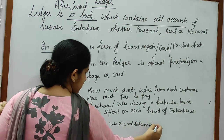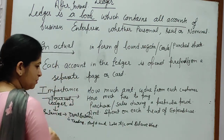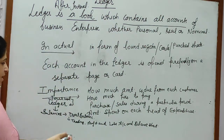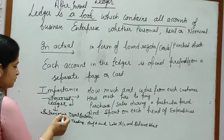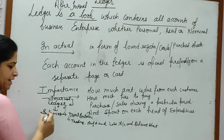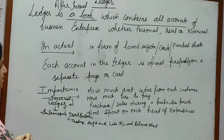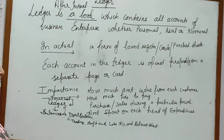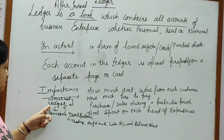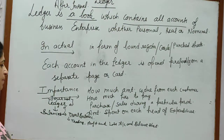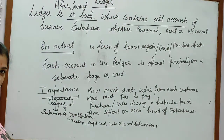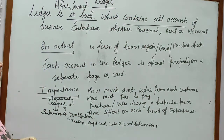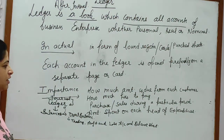These financial statements are prepared by taking the balances from the trial balance, and the trial balance is taking the balances from the Ledger. It means that Ledger is very important in a business enterprise, and on the basis of the Ledger, we will be able to know about the financial position of the business.